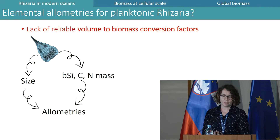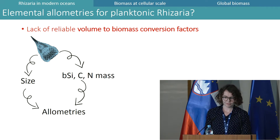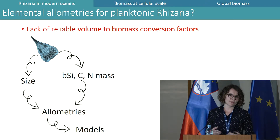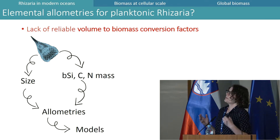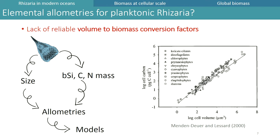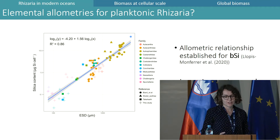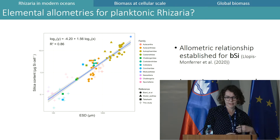This contribution is poorly constrained because we do not have reliable volume-to-biomass conversion factors. A way to convert size to elemental mass is to use allometric relationships, because they link simple morphological traits such as size to functional traits such as mass. The benefit of allometries is that we can implement them in models at larger scales like the population scale. Allometric relationships linking carbon content to size were established previously for various protists such as diatoms and dinoflagellates in the key paper by Menden-Deuer and Lessard.